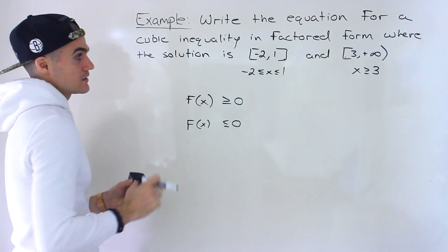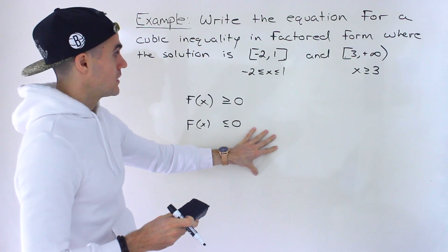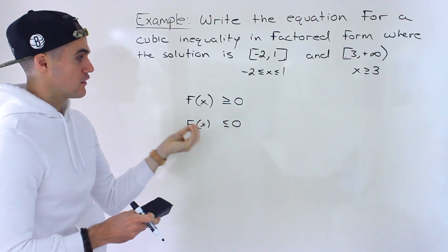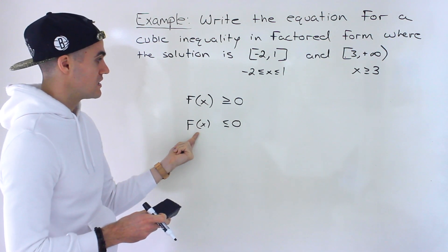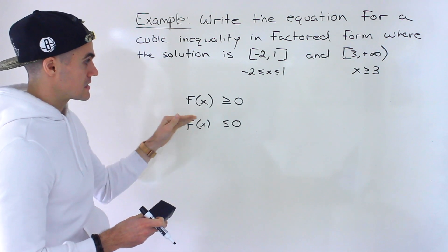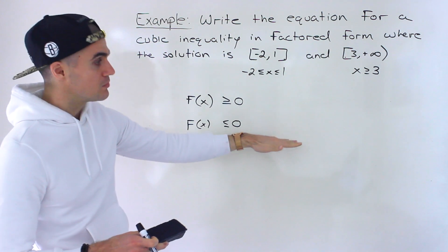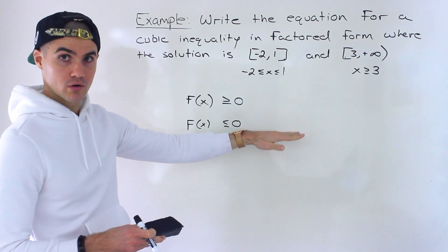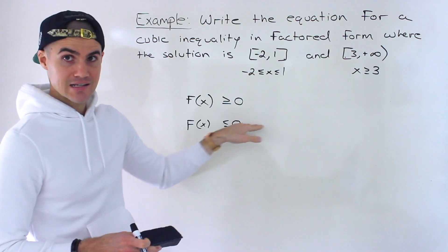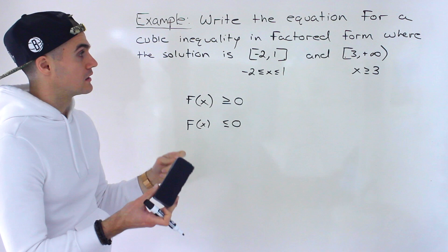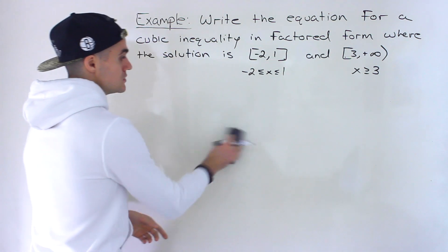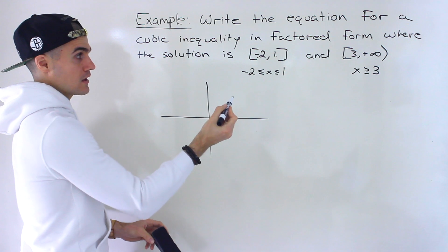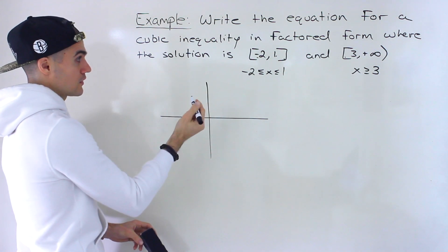Usually when we've solved these kinds of questions, notice that these points — negative two, one, and three — end up being the x-intercepts of the polynomial. Because when f(x) is greater than or equal to zero, it's above or on the x-axis, and when it's less than or equal to zero, it's below. The reference points are the intercepts. So we can use negative two, one, and three as the intercepts of the cubic function.